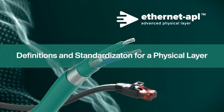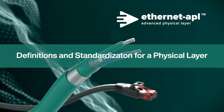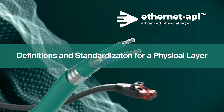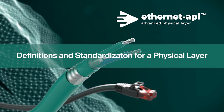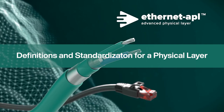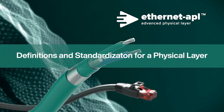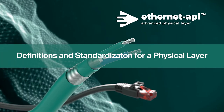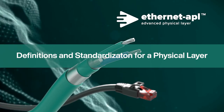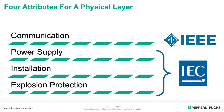Ethernet APL standardizes all aspects for a physical layer that is fit for the field of process plants. Standardization enables everyone to incorporate it into products, services, and operations. Four aspects need to be standardized to provide a complete definition of a physical layer: communication, power supply, installation, and explosion protection.